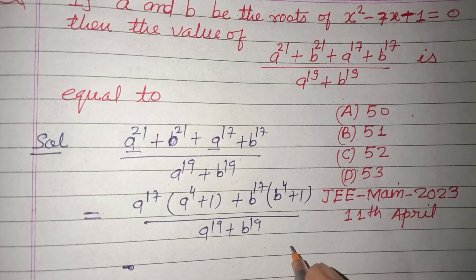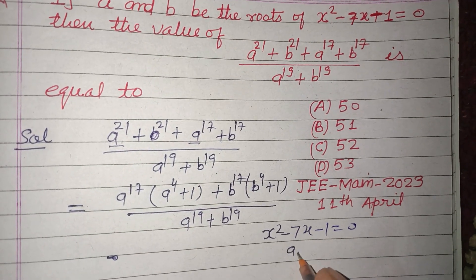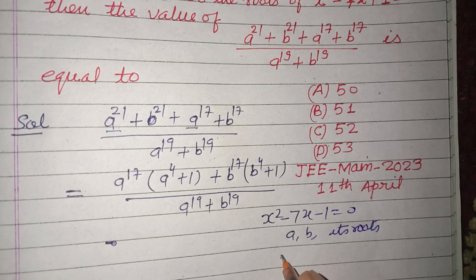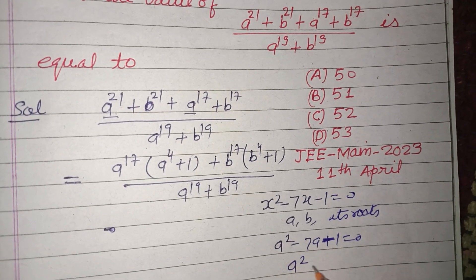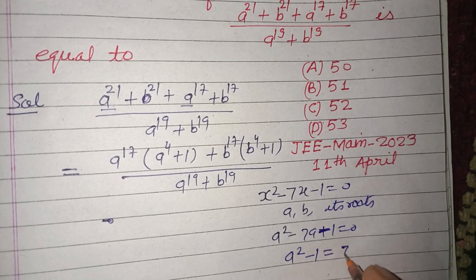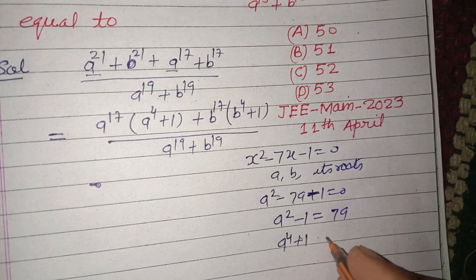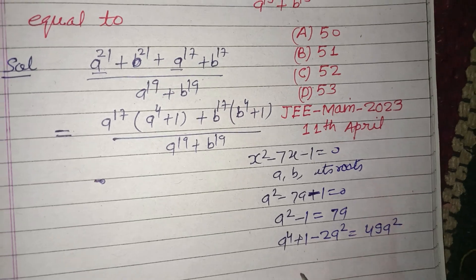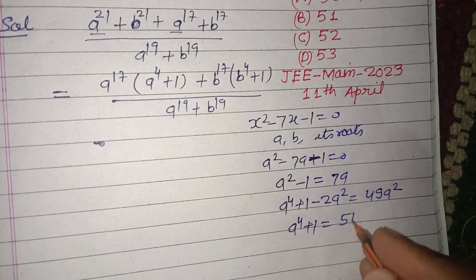Now, the given equation is x² - 7x - 1 = 0, and a and b are its roots. Therefore a² - 7a - 1 = 0, so a² - 1 = 7a. Squaring both sides: a⁴ + 1 - 2a² = 49a². So a⁴ + 1 = 49a² + 2a² = 51a².